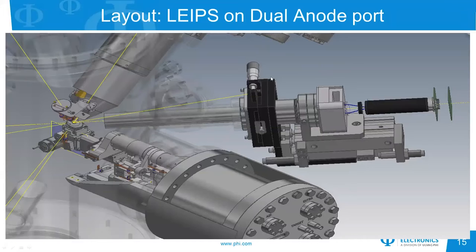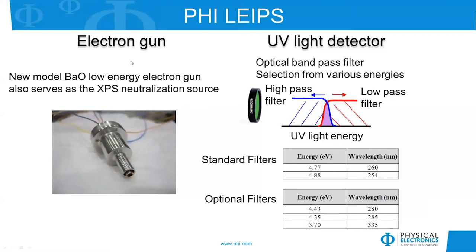A layout of what the hardware looks like for LIPS: we're using the barium oxide neutralizer as the incoming electron source. The detector uses an optic lens inside the vacuum, and outside the vacuum is where you change the optical filters — a very easy addition to the system. The UV detector is a combination of a high-pass filter and a low-pass filter; combining the two allows a passband photon energy, and by using different filter materials you can change the energy of the UV light detected. We have five different detectors available for customers to use.